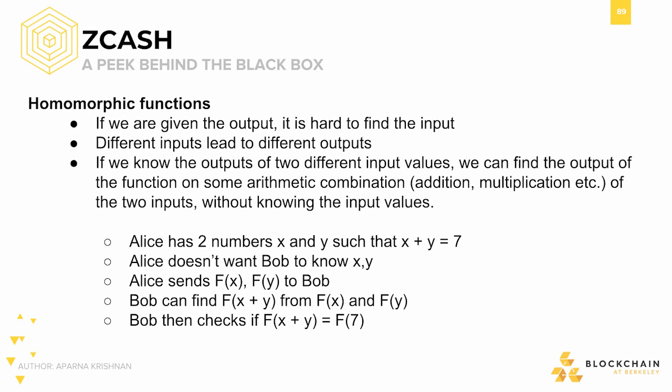Also, enabling Bitcoin-style transparent transactions makes it simple to integrate with Zcash using existing tools and infrastructure originally built to support Bitcoin. ZK-SNARKs are built on top of homomorphic encryption functions, which have the following properties: given an output, it's hard to find the input; and different inputs should lead to different outputs. What's interesting is that rather than wanting homomorphic functions to be random, we want to be able to perform operations on outputs of homomorphic functions. For example, if we know the outputs of a homomorphic encryption function on two different input values, we can find the output of the function on some arithmetic combination of the two inputs, all without knowing the input values themselves — in other words, allowing computation on ciphertext, generating an encrypted result which, when decrypted, matches the result of the computation as if performed on the plaintext itself.